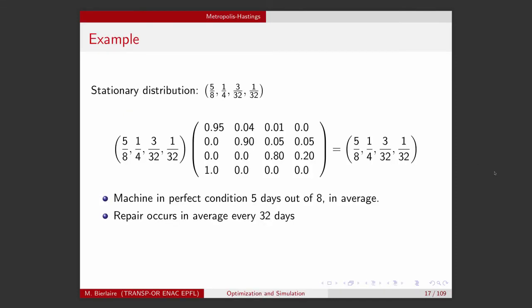If you solve the system of equations for the stationary distribution, what you obtain is that, on average, the machine will be in perfect condition five days out of eight, and it will be repaired one day out of 32. So in the long run, this is what will happen. This illustrates the concept of stationary distribution — and as you can see, this is the system of equations that we talked about before.